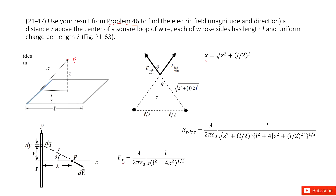Now you can see that in the previous result, we had the wire's electric field as a function. So you just need to replace x with this equation — put this x inside — and you get the electric field for each wire.